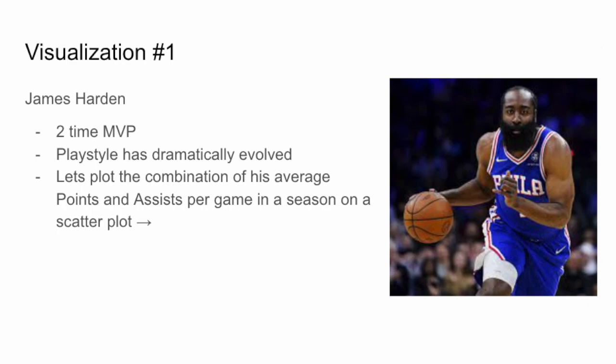For our first visualization, we're going to talk about James Harden. He's a two-time MVP, and his play style has dramatically evolved over the last 10 years. We can plot the combination of his average points and assists per game in a season on a scatterplot. This is interesting because towards the beginning of his career, he tended to average less points per game and less assists per game. His peak in performance is very noticeable in this plot.